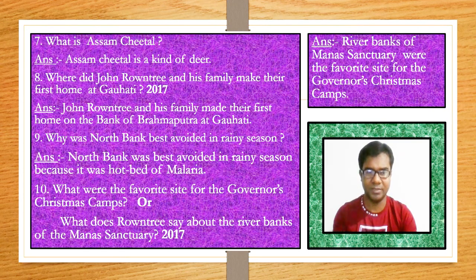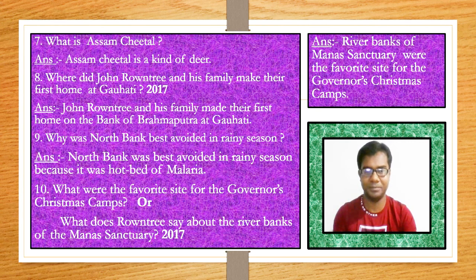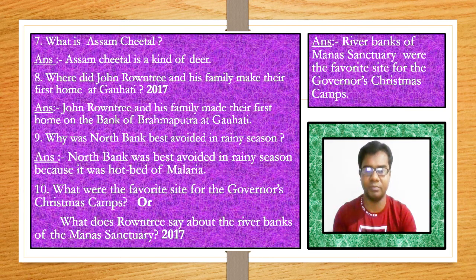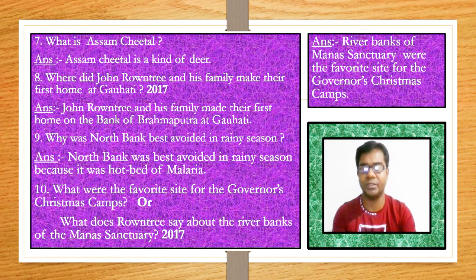Question: What is Assam Chittal? Assam Chittal is a kind of deer. Question: Where did John Rondre and his family make their first home at Guwahati? John Rondre and his family made their first home on the bank of the Brahmaputra at Guwahati.